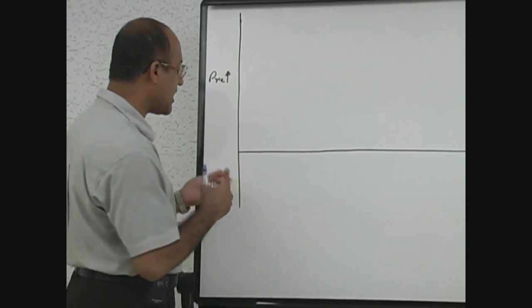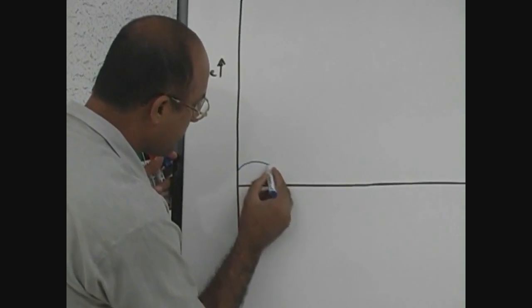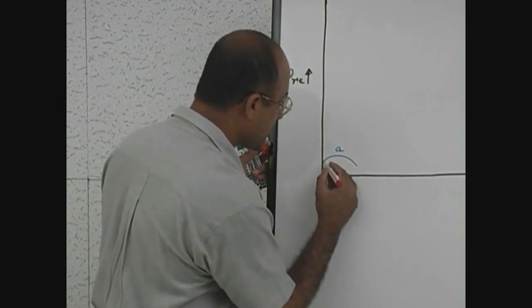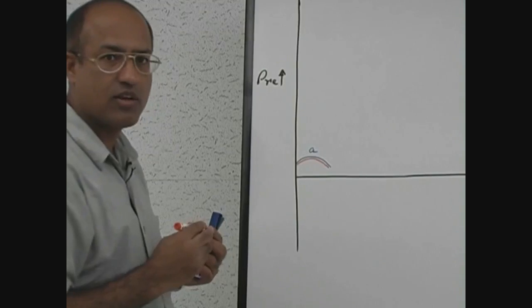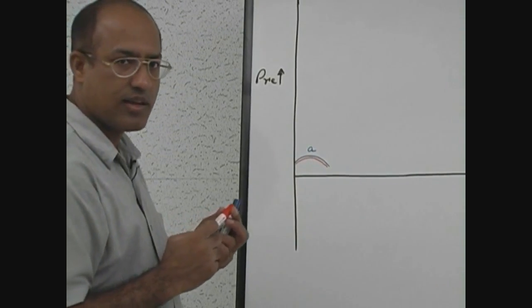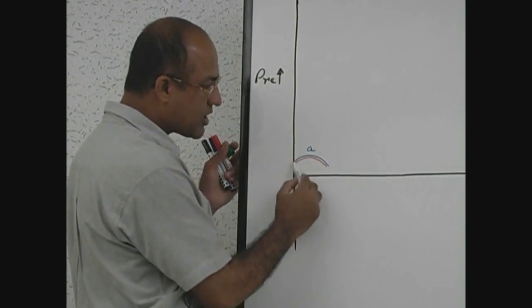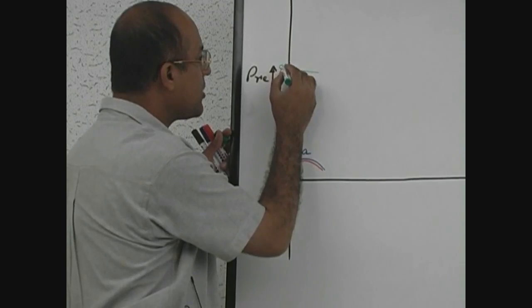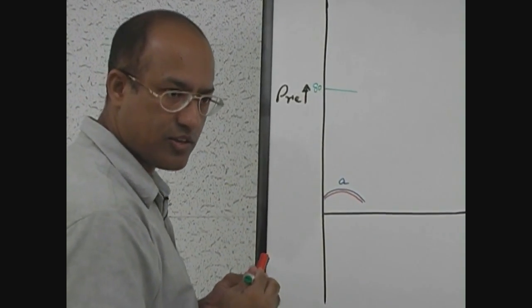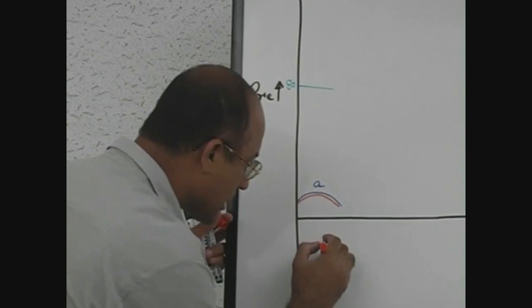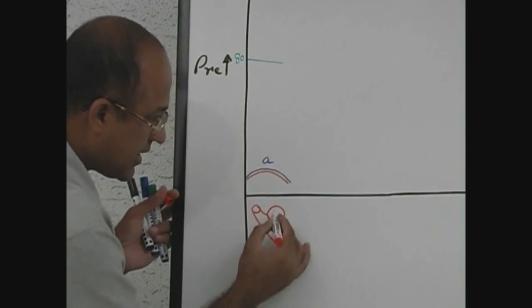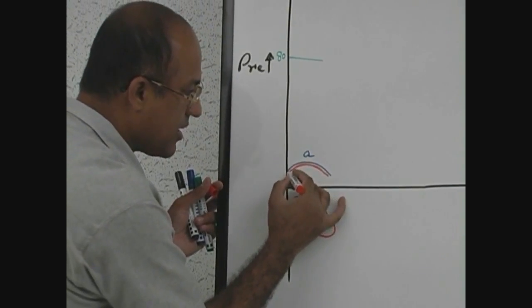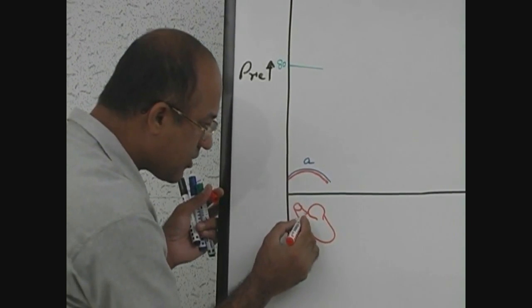In the very first phase, atrial contraction starts — atrial pressure goes up, producing the A wave. Along with that, ventricular pressure also goes up. At this same moment, aortic pressure is around 80 mmHg. The atrium is contracting, transmitting pressure to the ventricle, while the mitral valve is open and the aortic valve is closed.